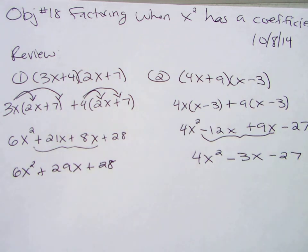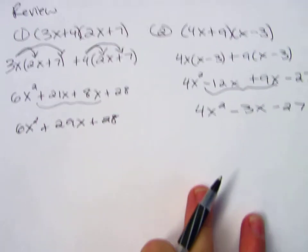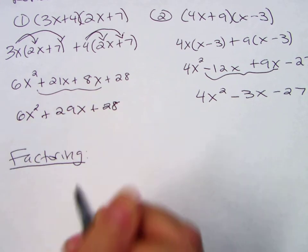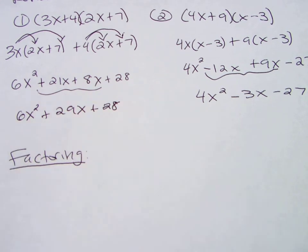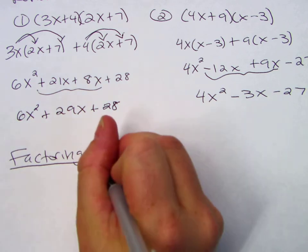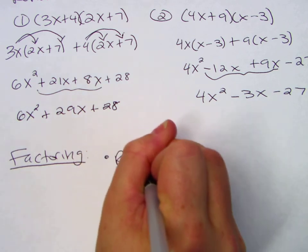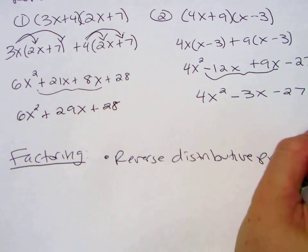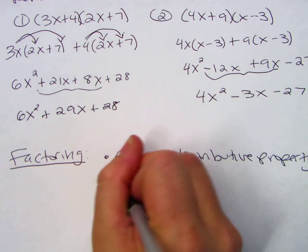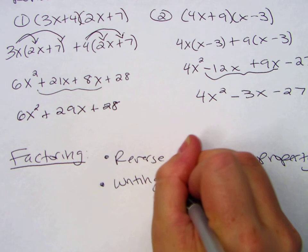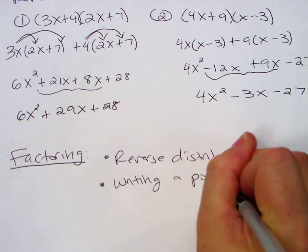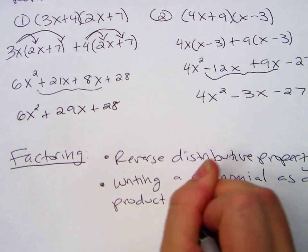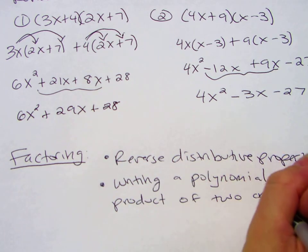All right, so today we're going to be doing the reverse of what we just did. So remember, what's factoring? What is the definition of factoring? Not factoring the noun, but factoring the verb. What does it mean to factor? It's reverse distributive property. But even more important, it's writing a polynomial as a product of two or more polynomials.